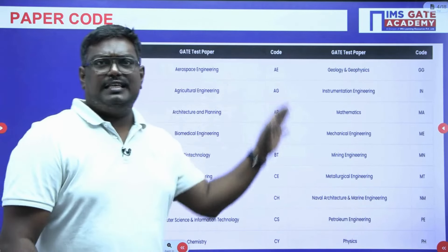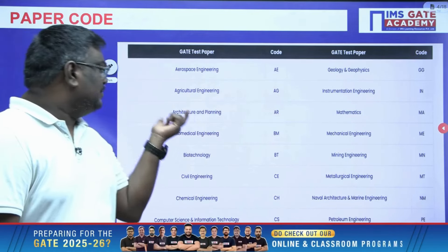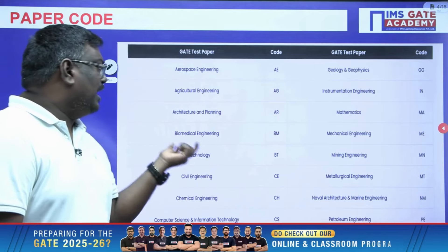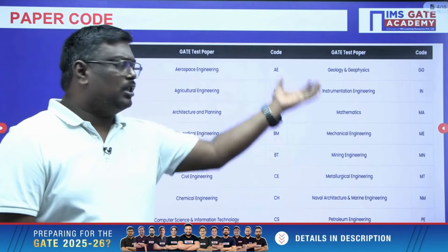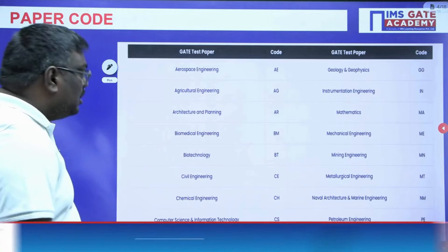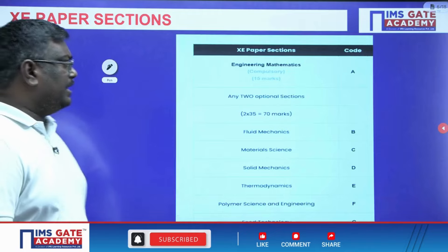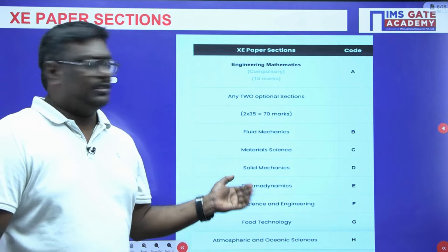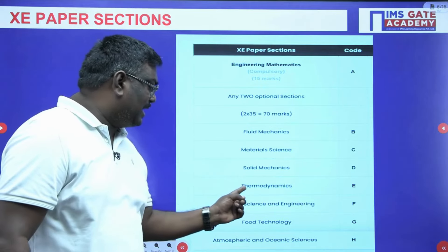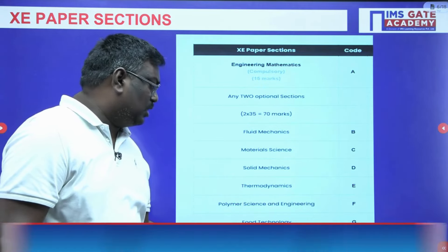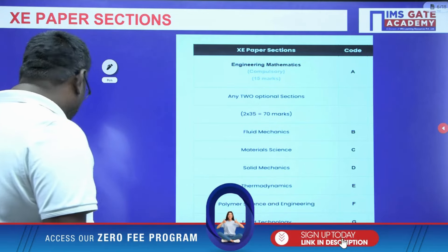These are the branch codes: aerospace engineering (AE), agricultural engineering (AG), architecture (AR), biomedical (BM), biotechnology (BT), civil engineering, and so on. We also have the XE paper sections, which include fluid mechanics, material science, solid mechanics, thermodynamics, polymer science, food technology, atmospheric and oceanographic sciences, and engineering mathematics.